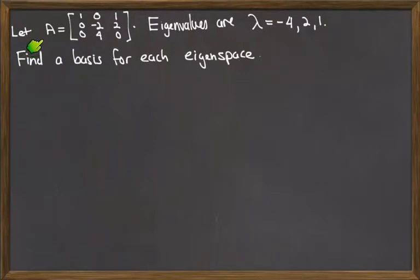In this example, I have the 3x3 matrix A presented above. In a previous video, we've determined that the eigenvalues of this matrix are lambda equal to -4, 2, and 1. And for each one of those eigenvalues, I want to find a basis for its corresponding eigenspace.